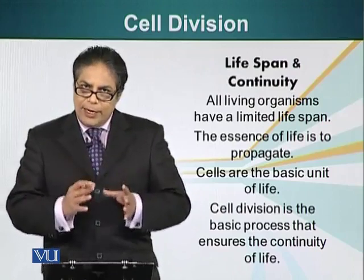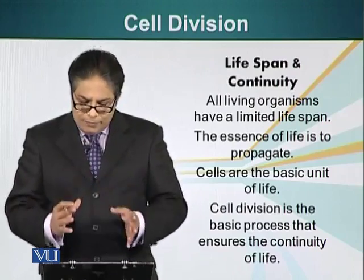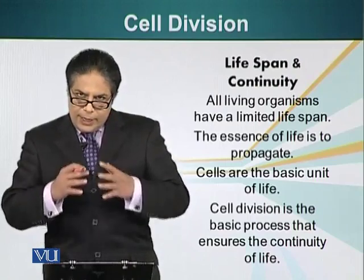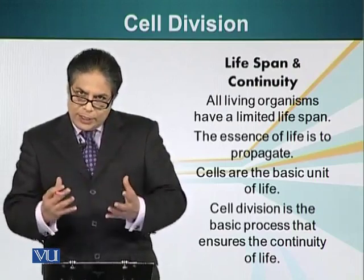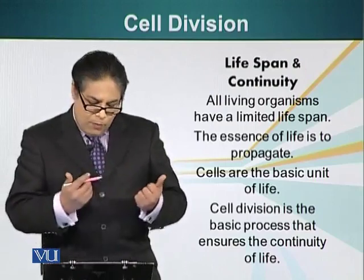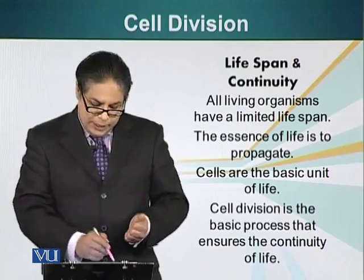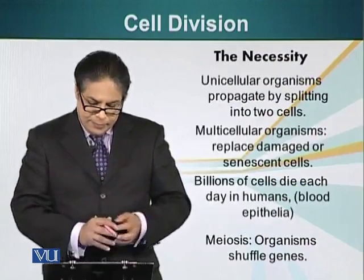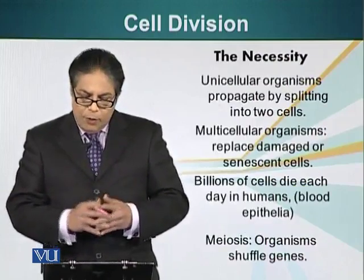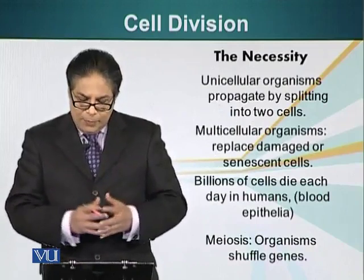As we have already established, the cell is the basic unit of life. Cell division is the process that ensures the continuity of life. From one cell, we can make more than one cell, or two cells. Unicellular organisms propagate by splitting into two cells — we look at that process also.